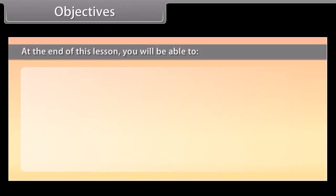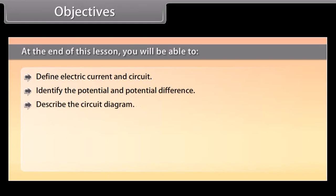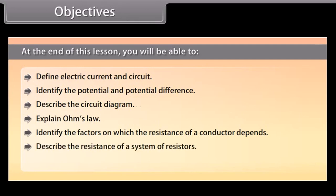At the end of this lesson, you will be able to: define electric current and circuit; identify the potential and potential difference; describe the circuit diagram; explain Ohm's Law; identify the factors on which the resistance of a conductor depends; describe the resistance of a system of resistors; and explain the heating effect of electric current and electric power.